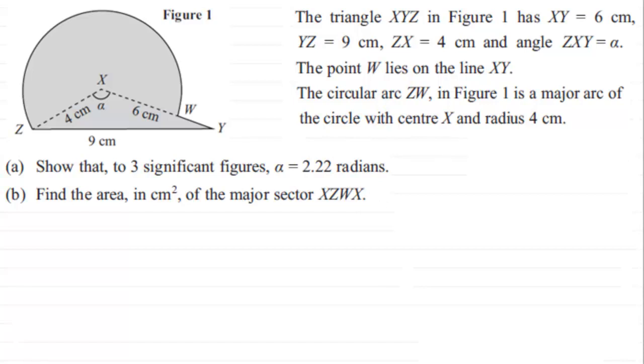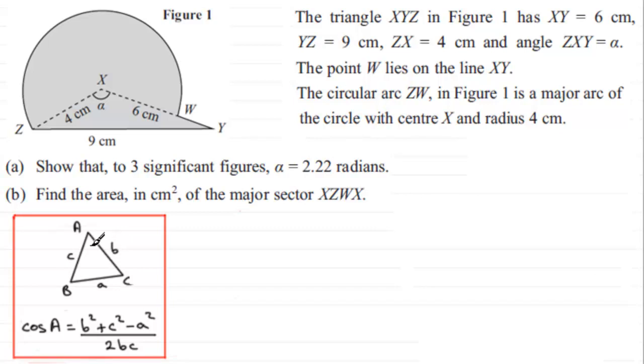Well first of all, to work out the angle alpha, I see that in this triangle XYZ I've got three sides given. And when you've got three sides given of a non-right angle triangle, you can use the cosine rule. The cosine rule is that if you've got a triangle ABC with your three sides ABC, then the cosine of an angle A is equal to the sum of the squares of the two sides that surround the angle minus the opposite side squared, all divided by twice the product of the two sides that surround the angle that you're looking to find.